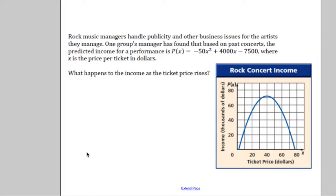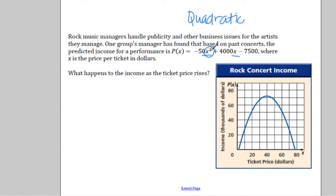One thing we want to look at first is the actual equation. Notice how it has an x² and an x. This x² term is what tells us that it's a quadratic. As soon as you see that the highest degree — the highest exponent — is a two, you know that it's a quadratic. So if we have something x squared, that's a quadratic.